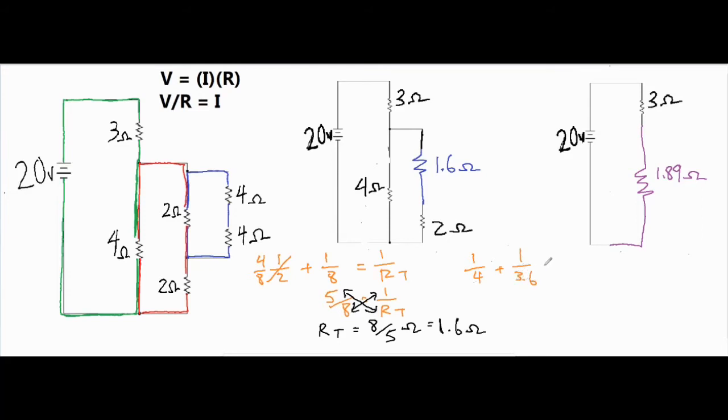We can go ahead and do the same sort of setup we did earlier and do 1 over 4 plus 1 over 3.6 equals 1 over RT. Now because this one doesn't look quite as nice as the first one, I can just use my calculator and do 1 over 4 plus 1 over 3.6 and I get 0.53. Be careful because that is not my answer.